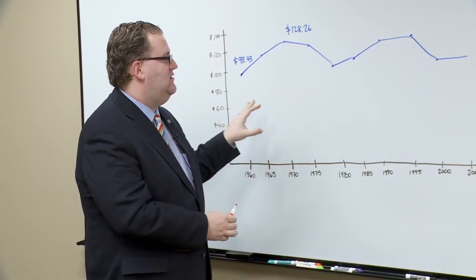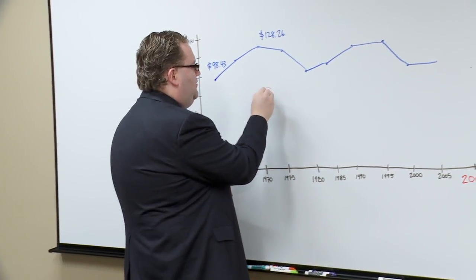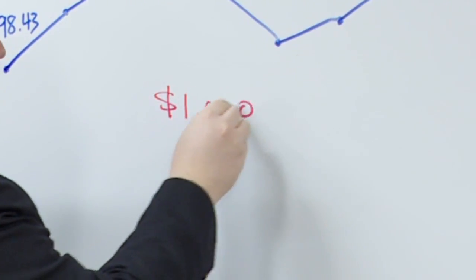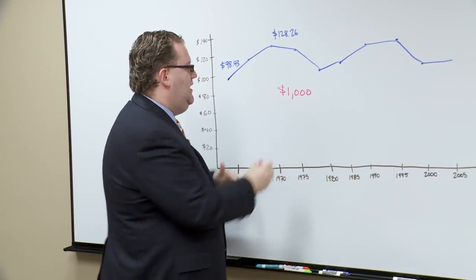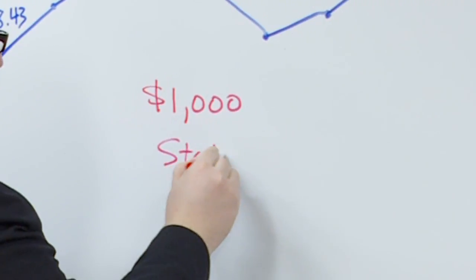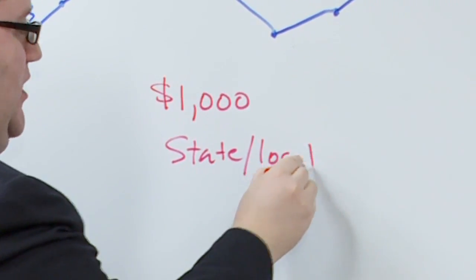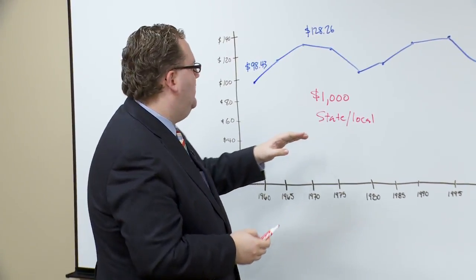This chart shows taxes that Washingtonians pay per thousand dollars of income. Now we're not an income tax state, but this helps us compare to the rest of the country. How much do we pay in state and local taxes per $1,000 we earn every year? This is adjusted for inflation.